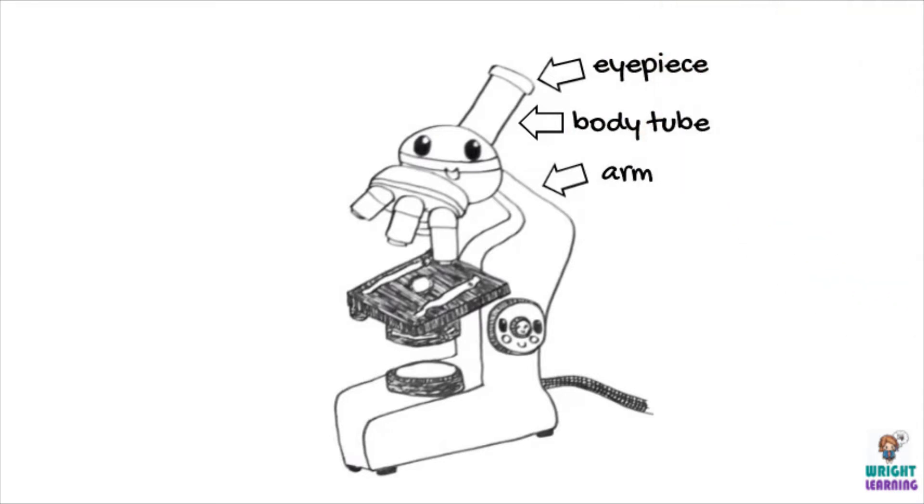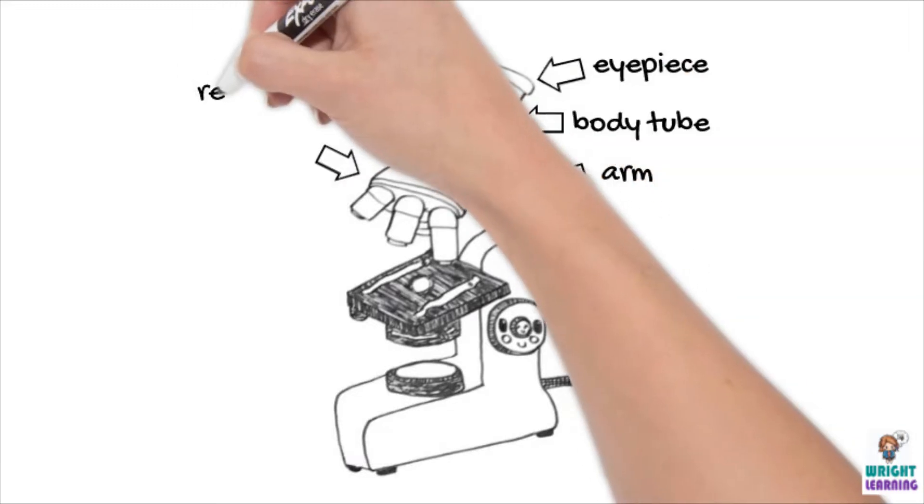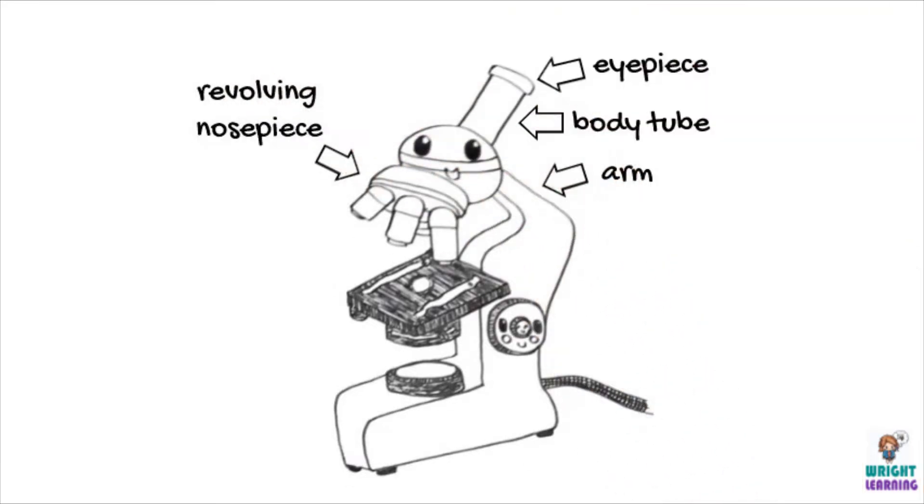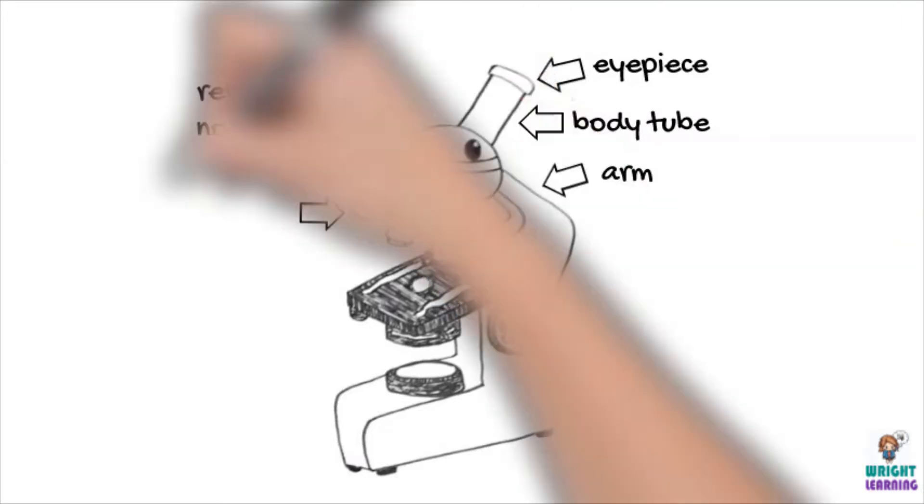This part of the microscope is called the arm, and is important when you're carrying your microscope. The revolving nosepiece allows you to adjust which of the objective lenses you're using to view your sample.